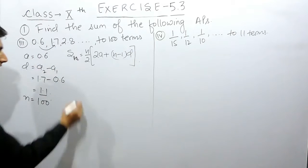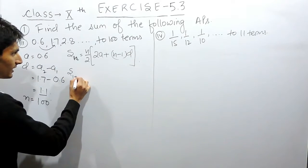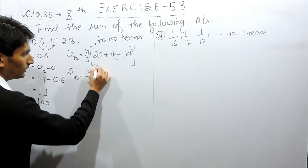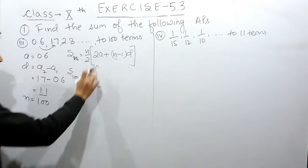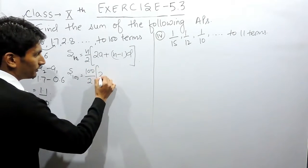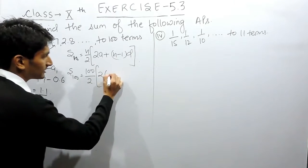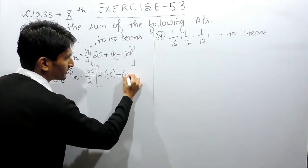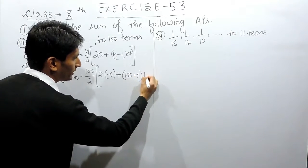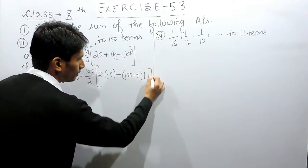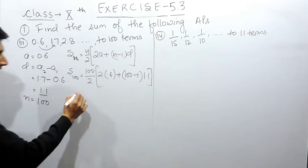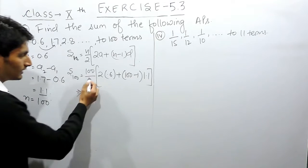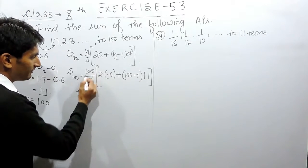Here the number of terms are 100, so this will become 100 by 2. The first term is 0.6, plus n minus 1 which is 100 minus 1, and the common difference is 1.1. Simply solving this equation we will get our answer. The 100 by 2 can be simplified to 50.